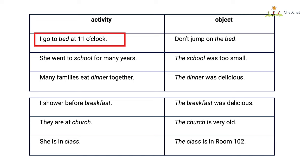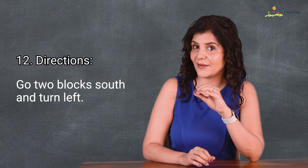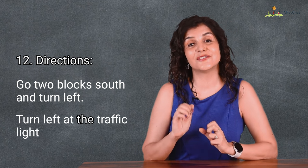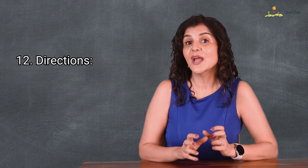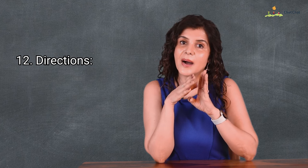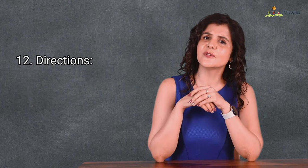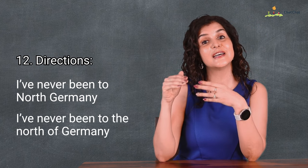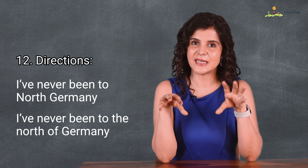Certain nouns refer to either a place/object or an activity. When they refer to an activity, do not use the definite article: I go to bed at 11 o'clock — no article. When used as a place: don't jump on the bed — use the. For directions, nouns indicating direction do not take the definite article: go two blocks south and turn left. But a specific point uses the: turn left at the traffic light. For compass directions: my house is to the east of the river; the south is quite warm. The difference between north Germany (a general place) and the north of Germany (a specific northern latitude region) is notable.